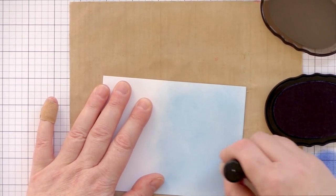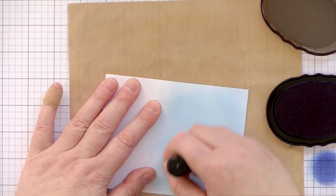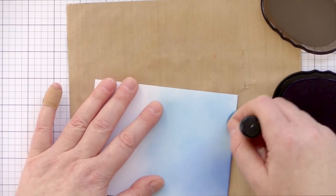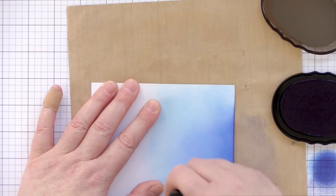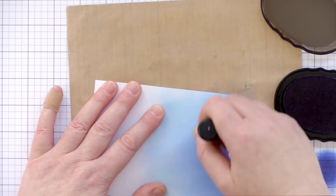Eventually I'm going to be die cutting a circle from the ink blended piece, and I want to make sure I cover a large enough area. I've now moved on to using a sapphire ink, which is a much deeper blue, and blending this in gently into the Caribbean sky.